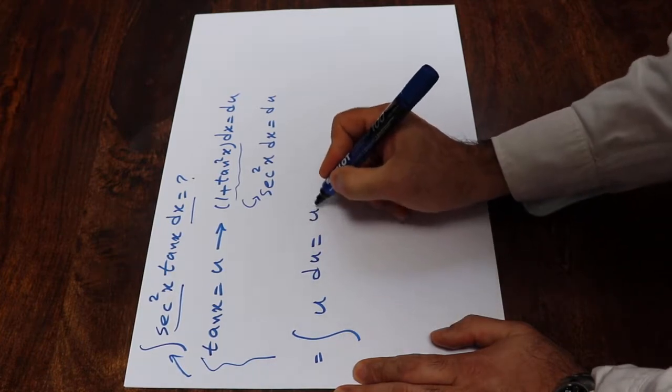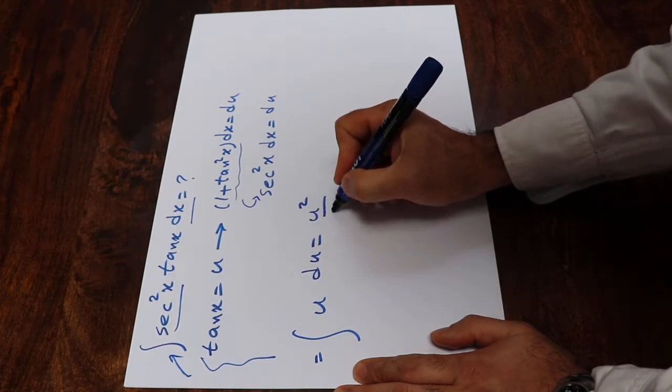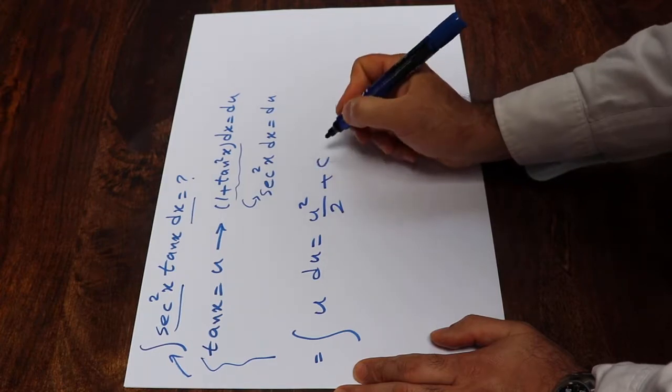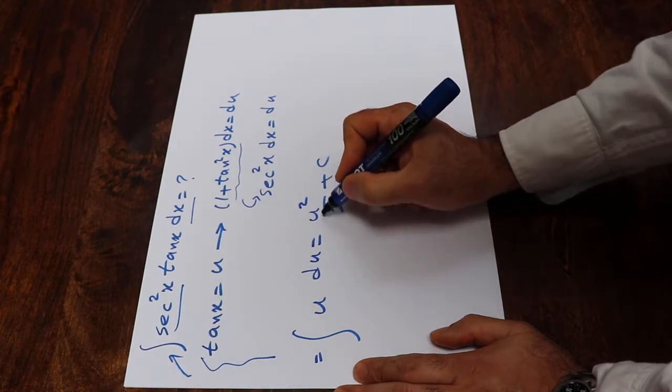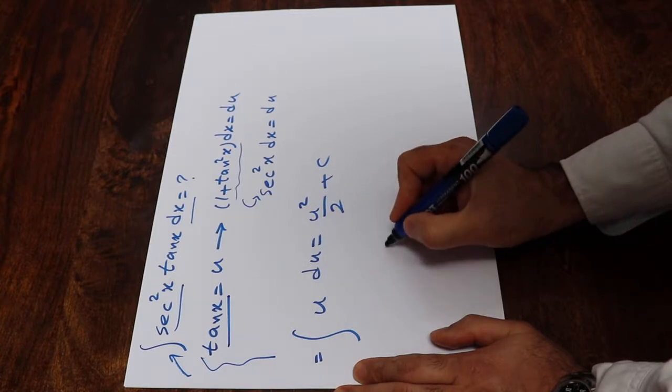And the integral of u is equal to u to the power of 2 divided by 2 plus c. So here all you need to do is to substitute this parameter u with the definition of u, which is tangent x.